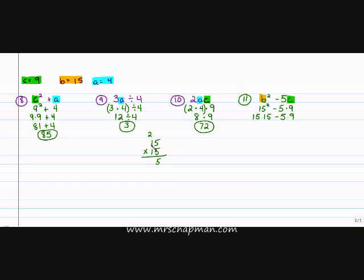5 times 5 is 25. Carry the 2. 5 times 1 is 5. Plus 2 is 7. Put my placement 0. 1 times 5 is 5. 1 times 5 is 5. And 1 times 1 is 1. Now, I'm going to add. 5 plus 0 is 5. 7 plus 5 is 12. Carry the 1. 1 plus 1 is 2. So, 15 times 15 is 225.